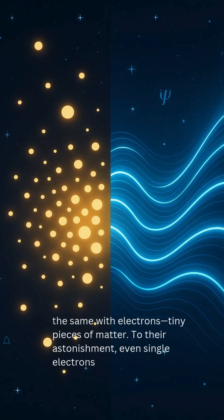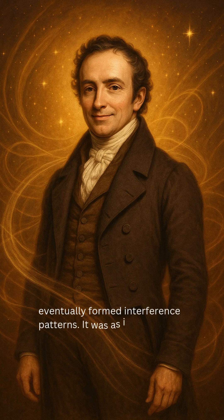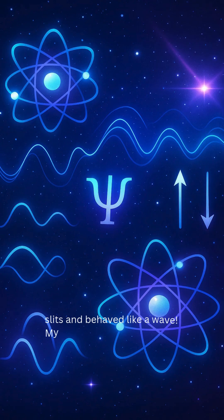To their astonishment, even single electrons eventually formed interference patterns. It was as if each particle went through both slits and behaved like a wave.